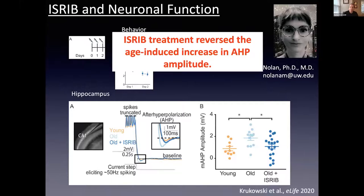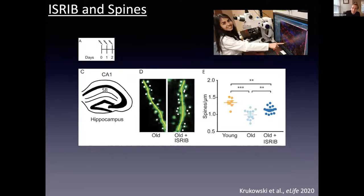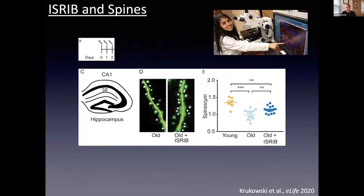Having seen these differences in neuronal function, we next looked at neuronal structure — specifically dendritic spines in the hippocampus — done by graduate student Alma Frias. Using fluorescent mice with labeled excitatory neurons, we measured spine density, i.e., the number of spines within a dendritic length. With age, there is a reduction in the number of spines in the hippocampus. When we give ISRIB to mice, we see an alleviation of this age-induced reduction in dendritic spines — not a full return to young levels, but a significant alleviation.